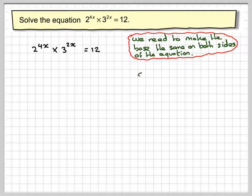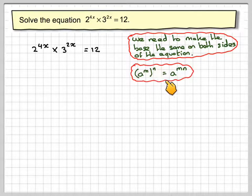So using this rule of indices, a to the m to the n is equal to a to the mn.